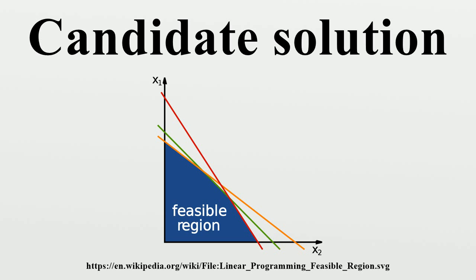Constraint satisfaction is the process of finding a point in the feasible set. In the case of the genetic algorithm, the candidate solutions are the individuals in the population being evolved by the algorithm.